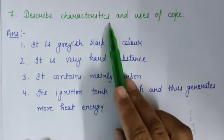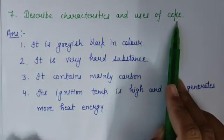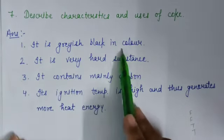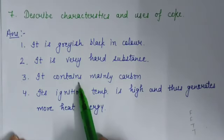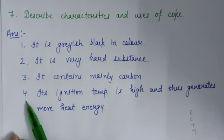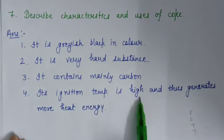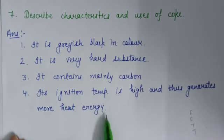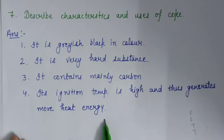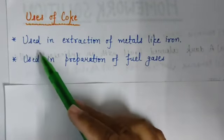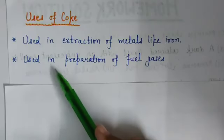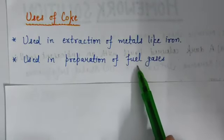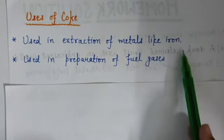Question number 7: describe characteristics and uses of coke. Characteristics: it is grayish black in color, it is a very hard substance, it contains mainly carbon, and its ignition temperature is high so it generates more heat energy. Uses: it is used in extraction of metals like iron and in the preparation of fuel gases.